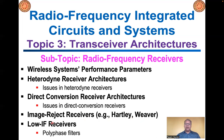Then we will look at the low-IF receiver architectures, and discuss the advantages and disadvantages in regard to this type of receiver architecture. Related to the low-IF receiver architectures, we will discuss different types of techniques in order to effectively reject the image, including the discussion on a polyphase filter.